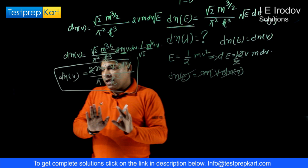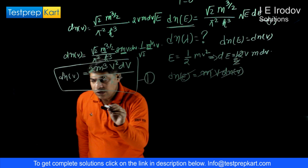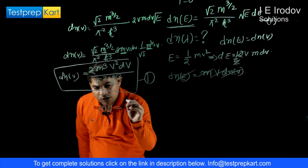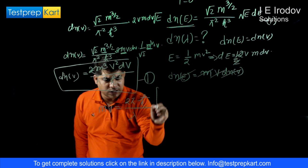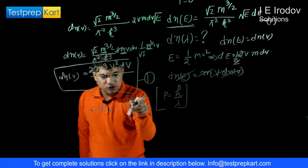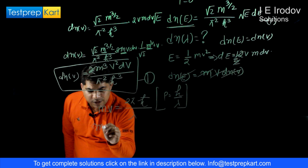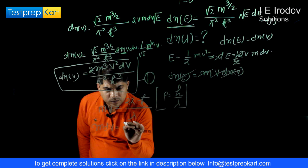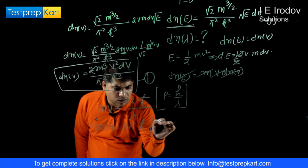Now we return to the de Broglie wavelength. For de Broglie momentum: mv equals 2π times h-bar over lambda, using the relation p equals h over lambda. Differentiating this gives: m dV equals 2π h-bar times (minus dλ over λ squared).